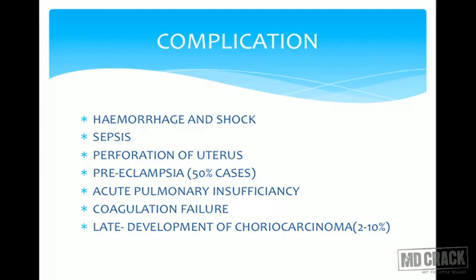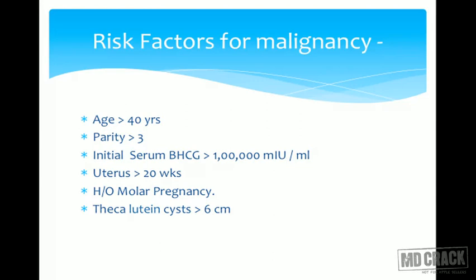Complications include hemorrhage and shock — the most common complication — due to disruption of vessels by villi. Infection can lead to sepsis. The mole can invade and perforate the uterus. Preeclampsia and acute pulmonary embolism are very common. Coagulation failure can occur. Importantly, a late complication is that the woman may subsequently develop choriocarcinoma.